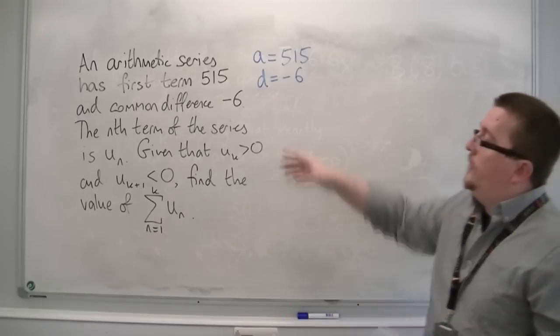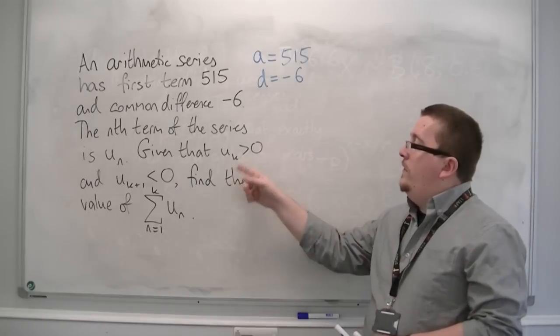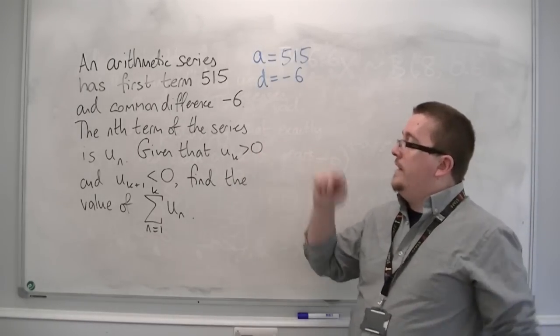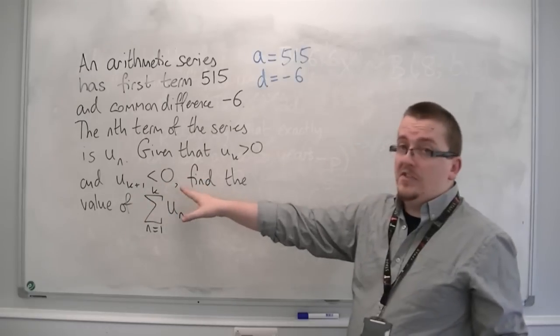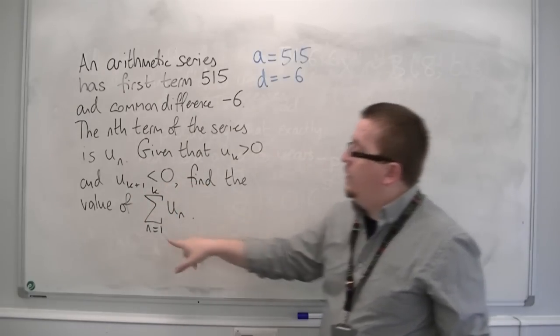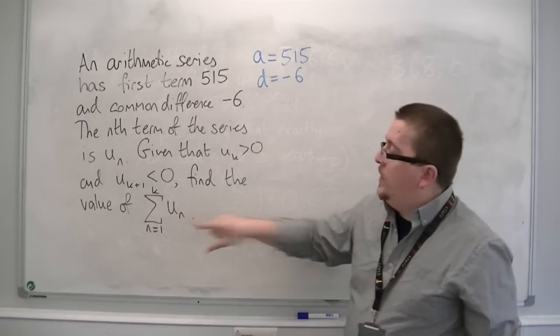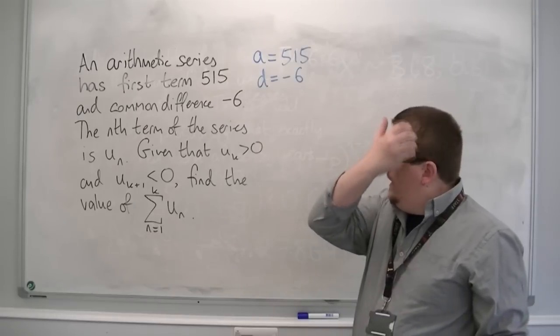The nth term of the series is u_n. Given that u_k is greater than 0, and u_(k+1) is less than 0, find the value of the sum of u_n from n=1 to k.